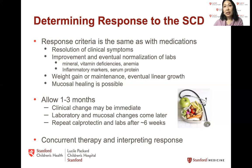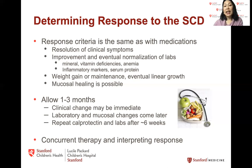We allow one to three months for response. Clinical change may be immediate — within one to two weeks. Laboratory and mucosal changes come later, and we do repeat calprotectin and monitor it every six to eight weeks while you're on the diet. Once we establish a really good maintenance score, then we check every six months while you're on the diet.